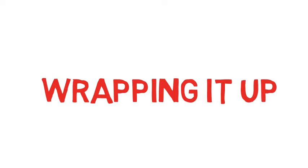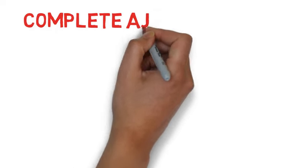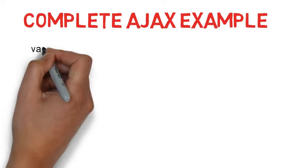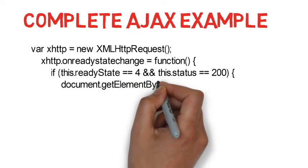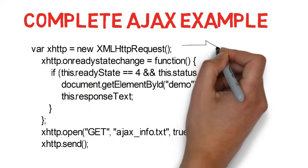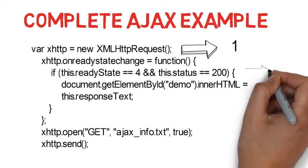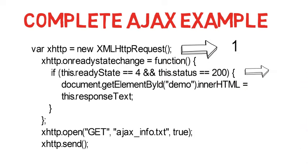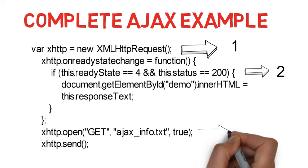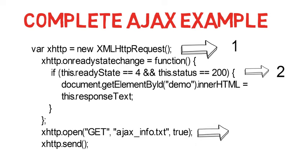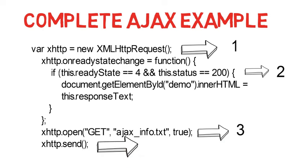To wrap up, here is the complete Ajax example. First, initialize the XMLHttpRequest object stored in xhttp. When readyState equals 4 and status equals 200, manipulate the innerHTML of the element with id 'demo' using the server response. Open a connection with xhttp.open() using the GET method, the URL 'ajax_info.txt', and boolean true for asynchronous. Finally, send the request with xhttp.send(). These four steps are necessary to make an Ajax request.